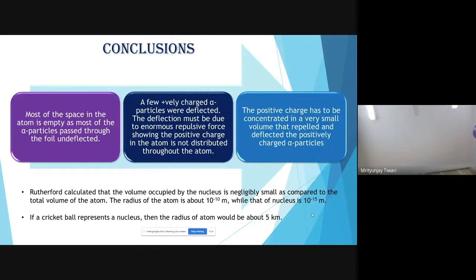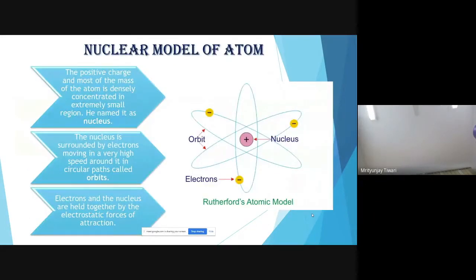Based on his experiment, Rutherford suggested a nuclear model of the atom with three key points: first, the positive charge and most of the mass of the atom is densely concentrated in an extremely small region called the nucleus; second, the nucleus is surrounded by electrons moving at very high speed in circular paths called orbits; third, electrons and nucleus are held together by electrostatic force of attraction.